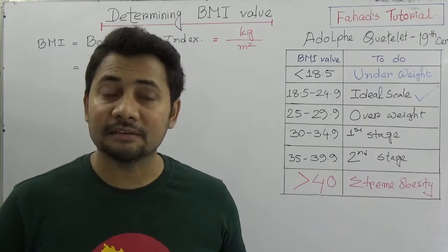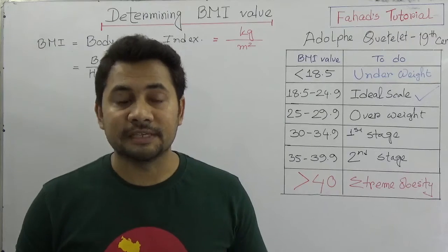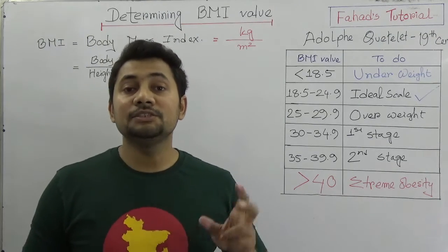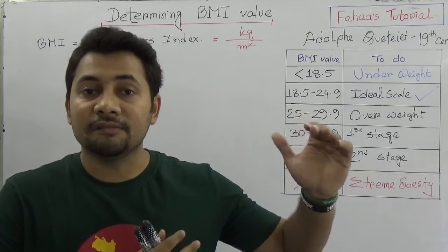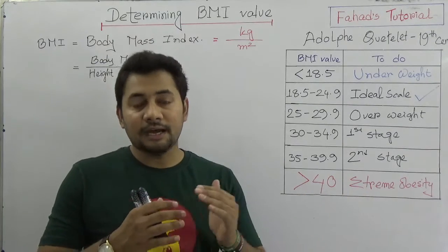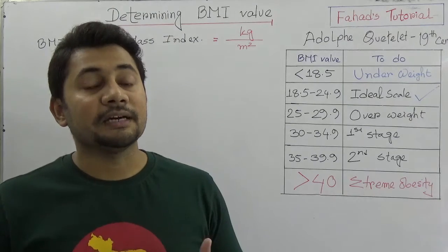Either a person is healthy or a person is obese and what is the stage of their obesity. So determining BMI, we only need two quantities of a person: that is the body mass of that person and the height of the person. So according to height, what should be the mass of the body - that is determined by BMI value.